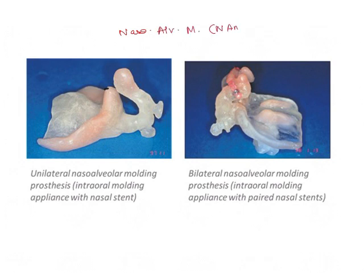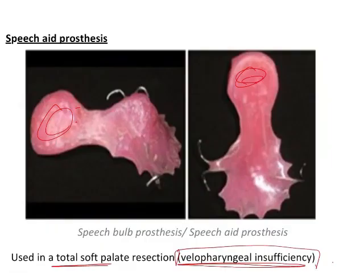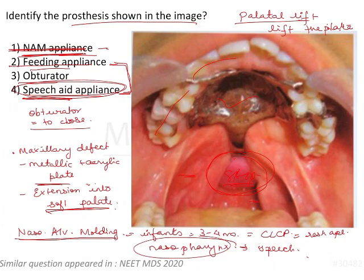This here is a NAM appliance — it's for infants with CLCP (cleft lip and cleft palate). This is the nasal stent that goes into the nose and helps in reshaping the alveolar tissues and nose so that surgery can be done more easily. Coming back to the question: the prosthesis shown is a speech aid appliance.